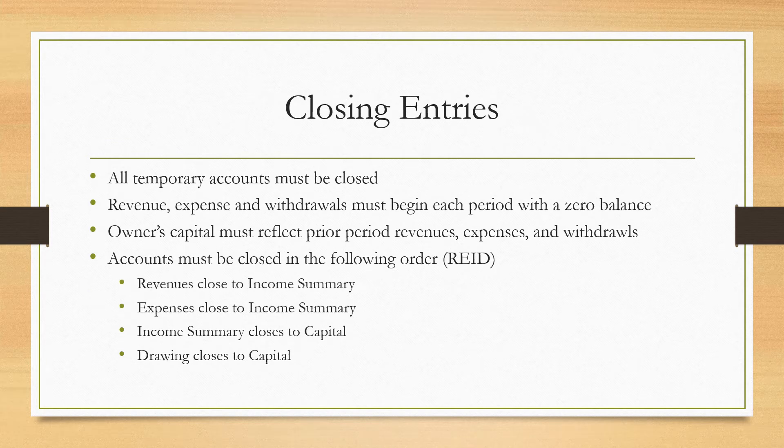When we look at closing entries, all temporary accounts must be closed. Revenues, expenses, and withdrawals must begin each period with a zero balance. The owner's capital needs to reflect any prior period revenues, expenses, and withdrawals. The order that we close the accounts is what we call REID. R is for revenues, and revenues need to close to an account called income summary.